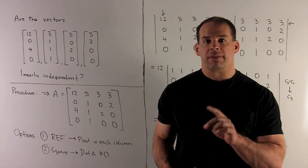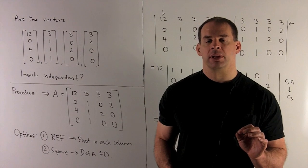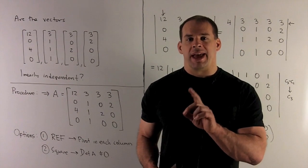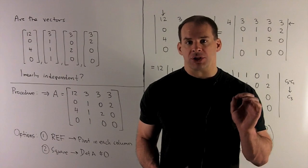What's the procedure? We're going to take our vectors and load them in as column vectors of a matrix A. Then, in general, what we would do is take A and apply row operations until we get it in row echelon form.